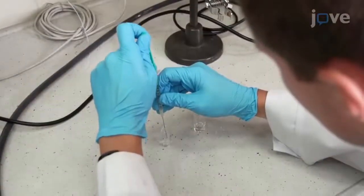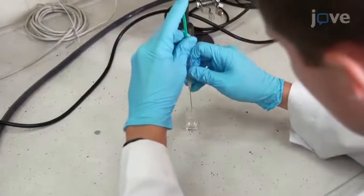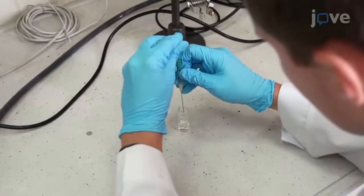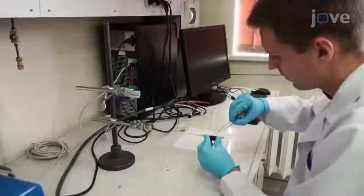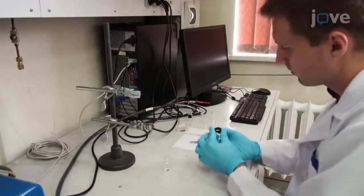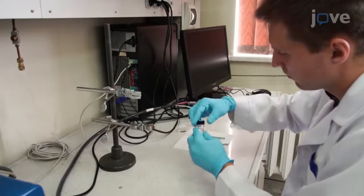Pipet 2 milliliters of this working solution into a 3 milliliter electrochemical cell, such as a glass v-vial, and close the cell with a gasket cap. Store the remaining working solution for later measurements.